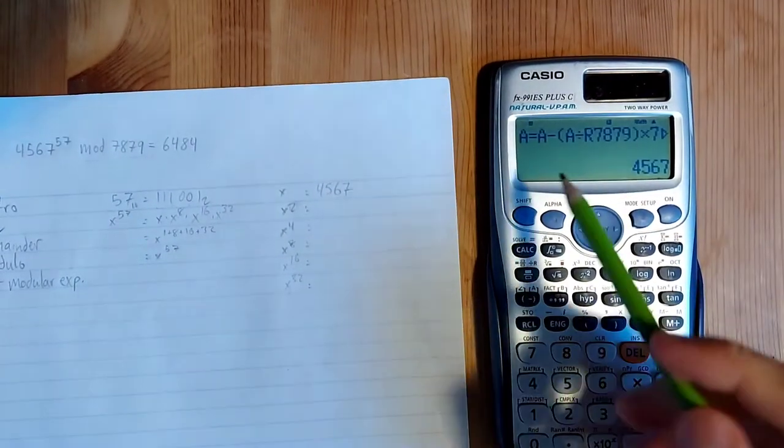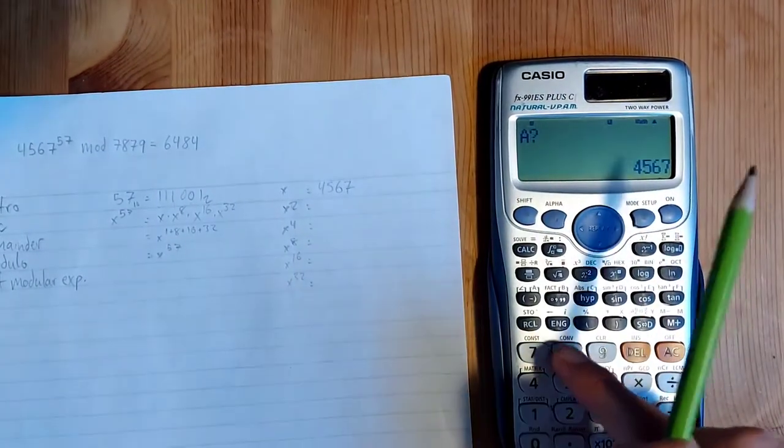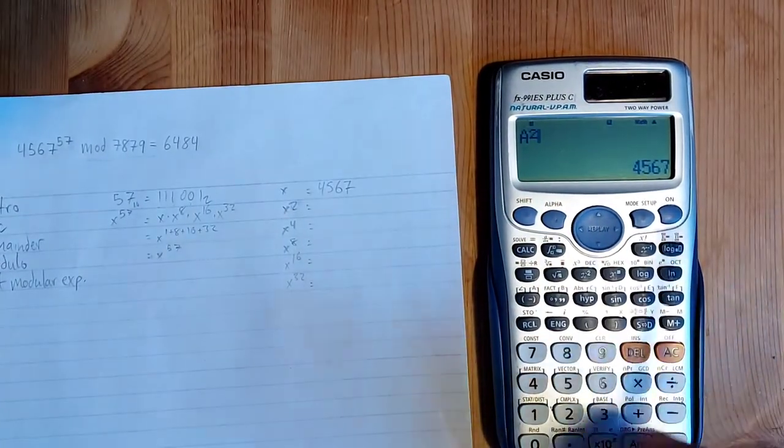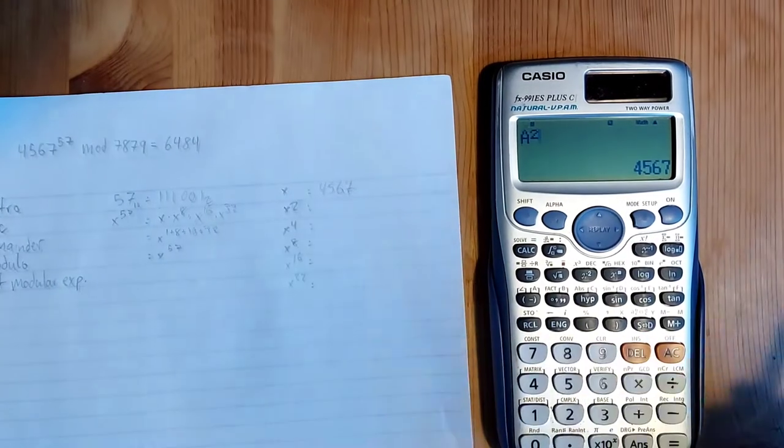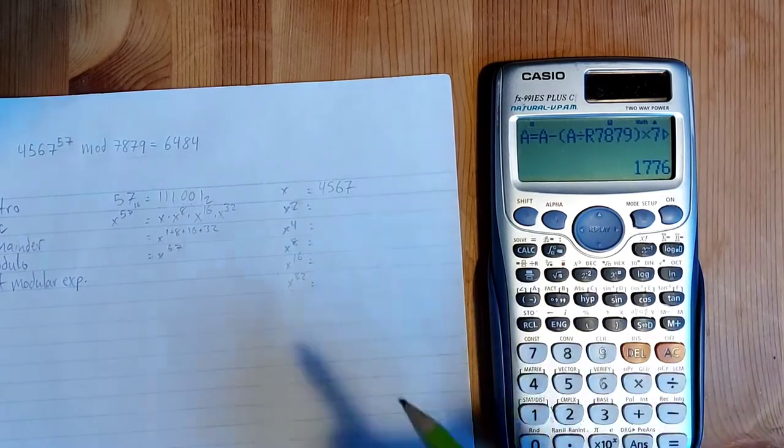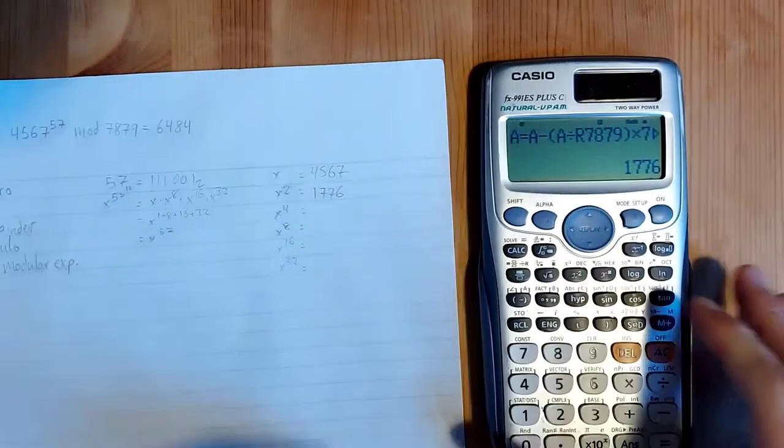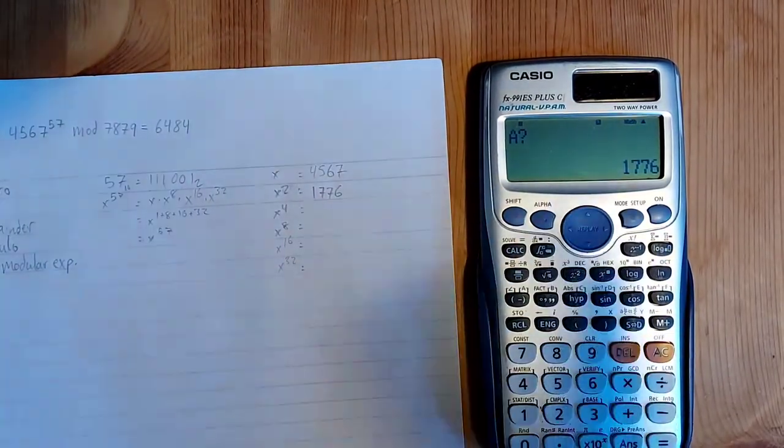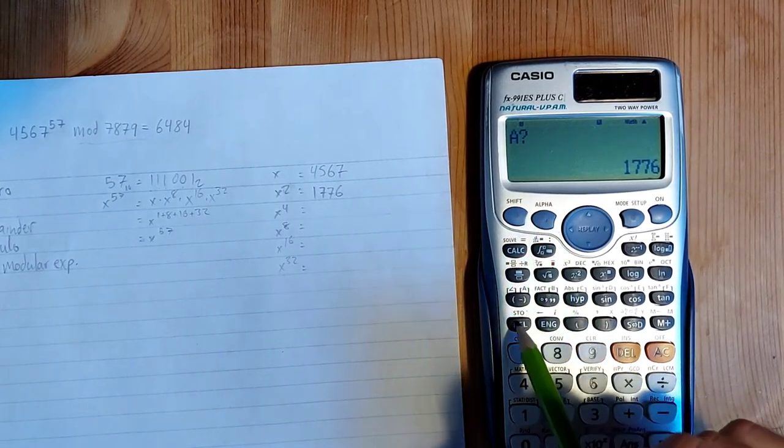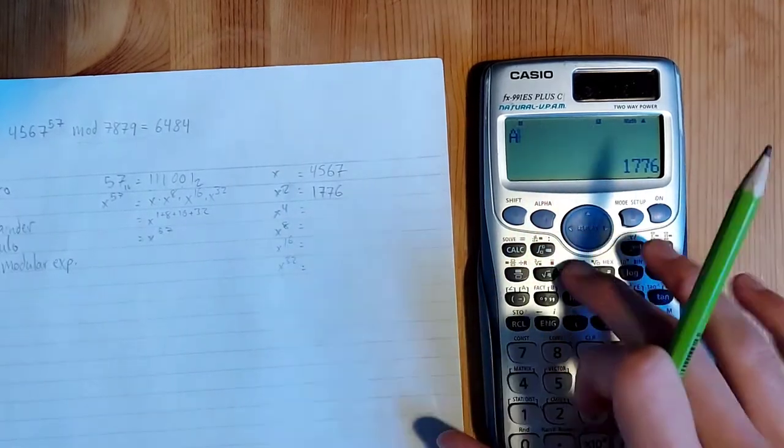And so now what we can do is because we just stored the value back into A, we can go calc, and then we can do alpha A squared. And so that is going to give us x squared mod 7879. And then we just hit equals. We can see it prints out 1776.